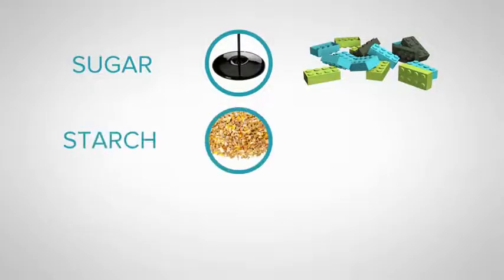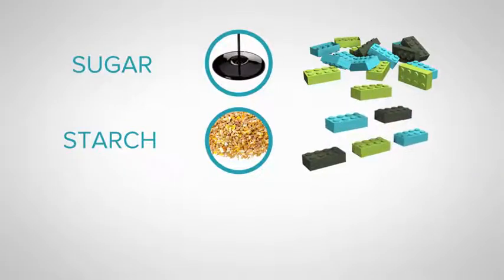Then starch, which is high in cereal grains and vegetable wastes, is like Lego blocks joined together in a simple way. They need to be pulled apart before they can be used.